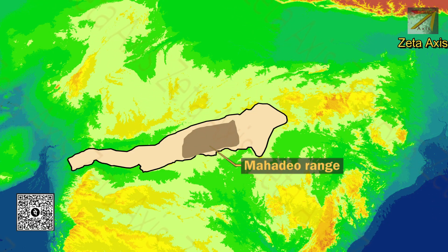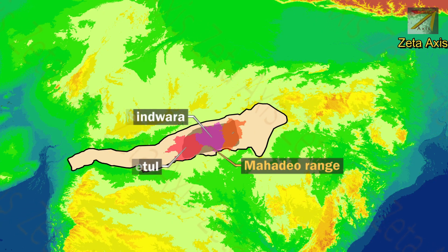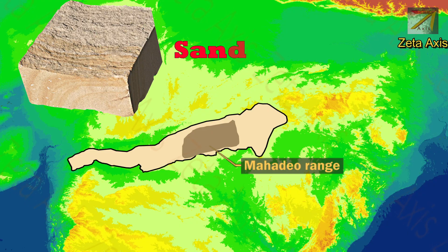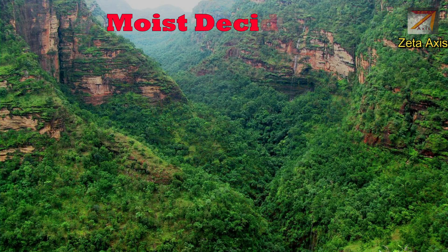Let's now see some important sub-ranges of the Satpura range. The first is Mahadeo hills, which runs mainly through Betul, Chhindwara and Seoni districts of Madhya Pradesh. The Mahadeo hills are mainly formed of sandstones and due to ample rainfall in this region, these hills have moist deciduous forests.